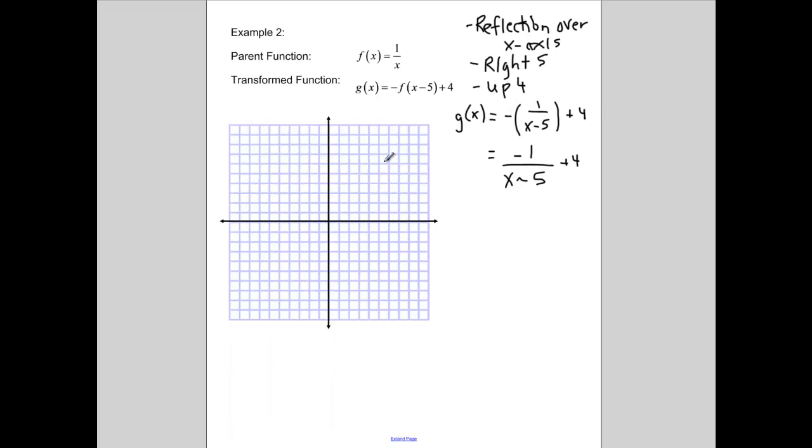Alright, so now we need to graph our parent function, 1 over x. Of course, you've memorized all these key points. And for this one, there are 6 key points. So let's label what they are again. I'll put the key points here.